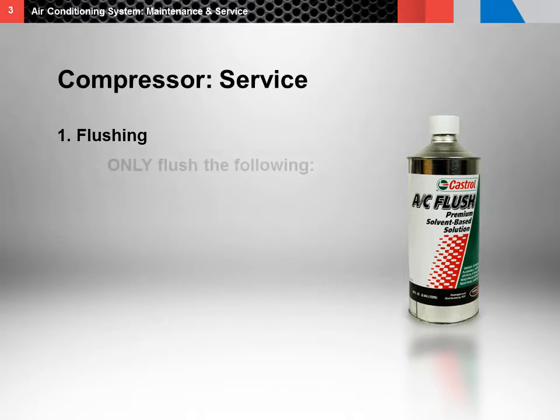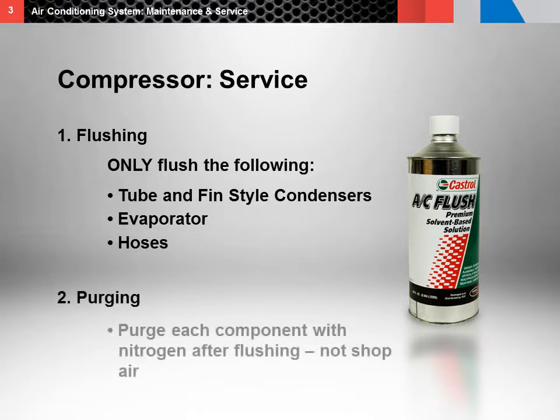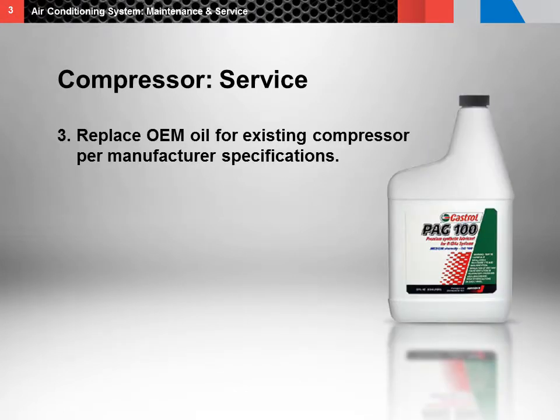Only flush the following components: tube and fin style condensers, evaporator, and hoses. Then purge each component with nitrogen after flushing, but not with shop air. During the flushing procedure, most of the refrigerant oil is removed, so add the total oil charge for the system. If we're using the existing compressor, check the oil in the compressor and subtract it from the total system oil charge.